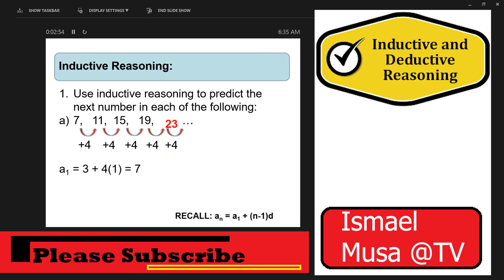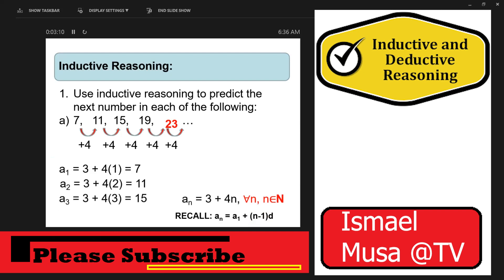The formula is: when n is 1, 3 plus 4 times 1 gives you 7; when n is 2, 3 plus 4 times 2 gives you 11; 3 plus 4 times 3 gives 15; 3 plus 4 times 4 gives 19; and 3 plus 4 times 5 gives 23. So we conclude that for any position n, the term is 3 plus 4 times n, where n is a natural number.